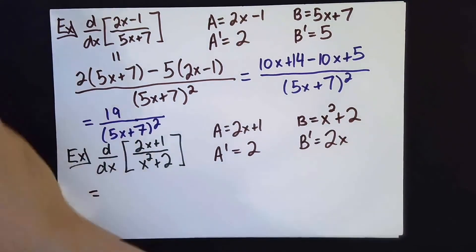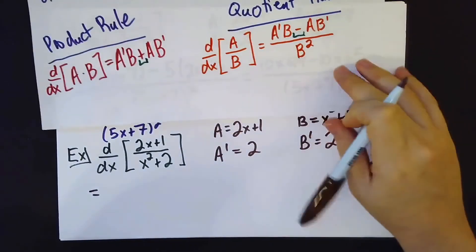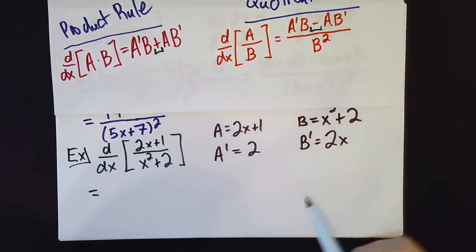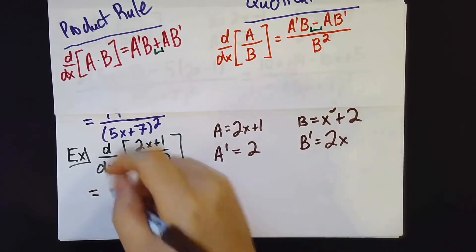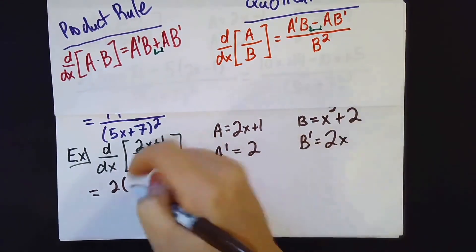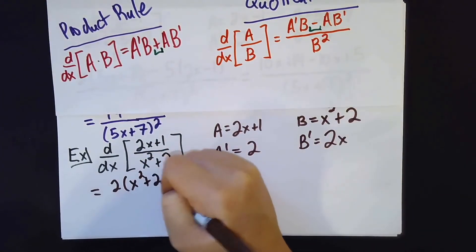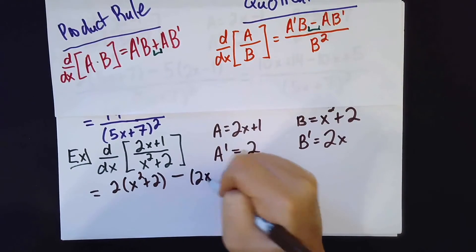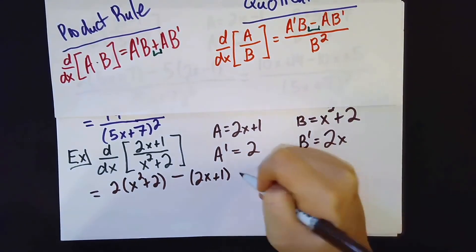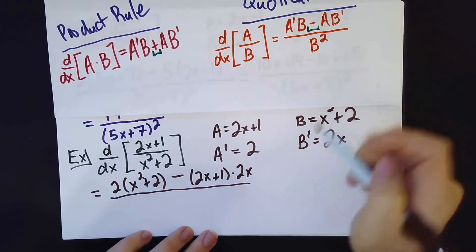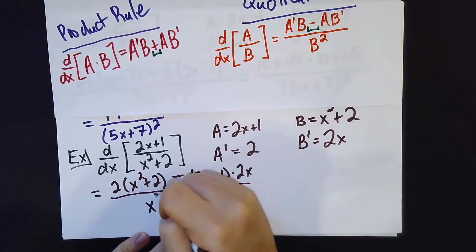And then sew all of this together, again, is the formula, which I'll put here to remind you, which is going to be 2 times x squared plus 2, minus 2x plus 1, times 2x, all divided by x squared plus 2 squared.